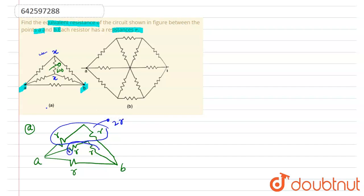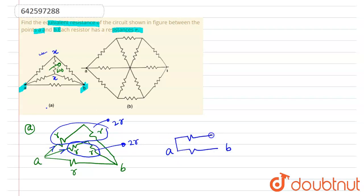These two are also in series combination, as the same current flows through both resistances, so their equivalent resistance is also 2R. Now the final circuit diagram between A and B will be: this is R, this is 2R, and this is 2R.